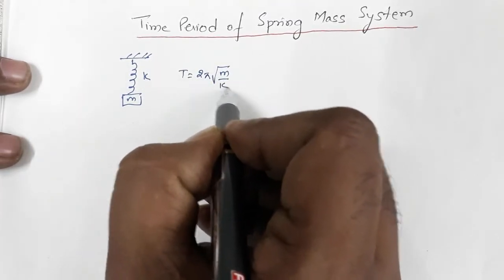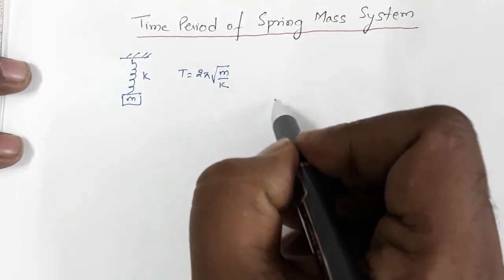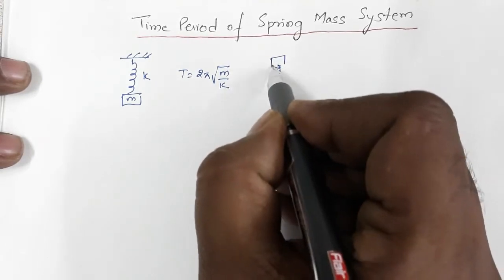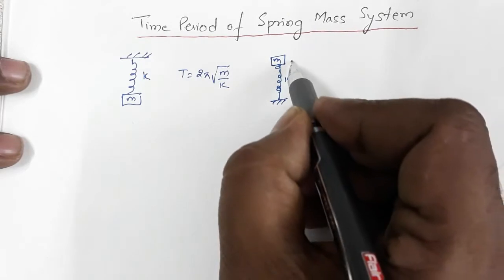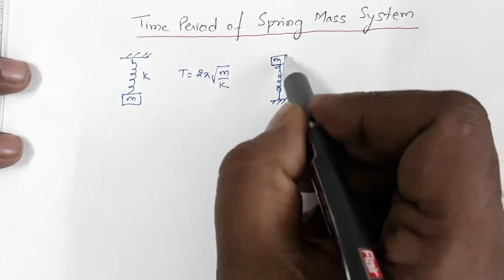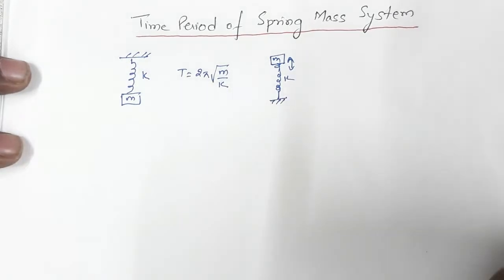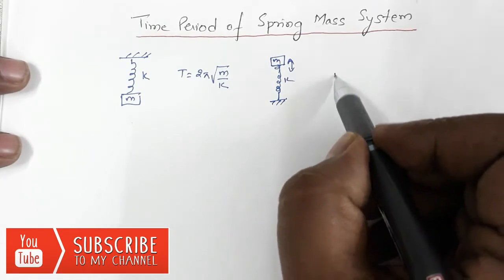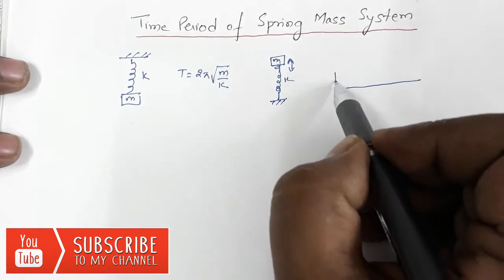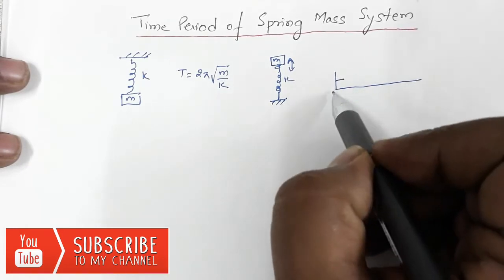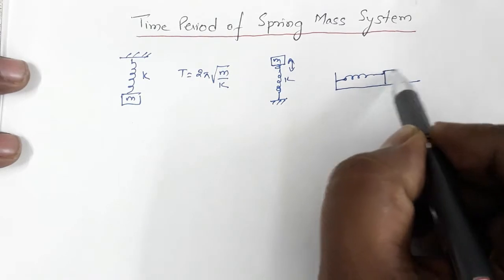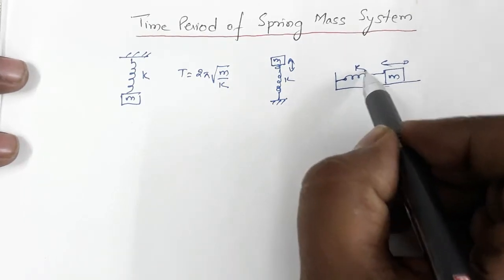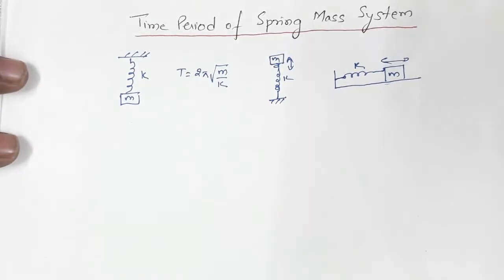Now suppose you have a system like this: rigid support on top, spring, and mass m hanging with spring constant k. The mass will oscillate and the time period is again T = 2π√(m/k). Similarly, if you have a spring oscillating horizontally on a smooth surface with a rigid support, block of mass m oscillating horizontally, k is the spring constant — again T = 2π√(m/k).